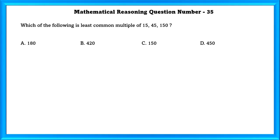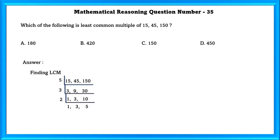Mathematical Reasoning Question No. 35: Which of the following is the least common multiple of 15, 45, and 150? All these numbers can be divided by 5. Finding LCM: 5 × 3 × 2 × 3 × 5 = 450. So our answer is D, 450.